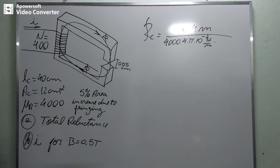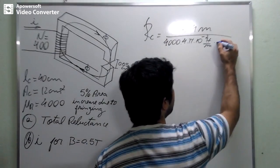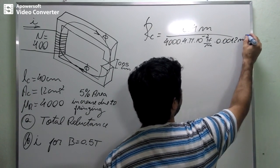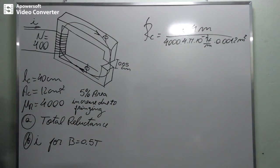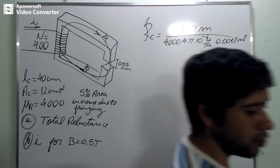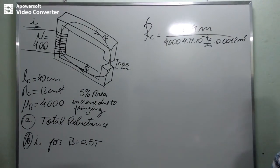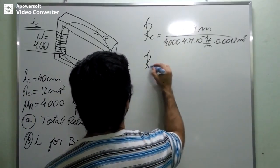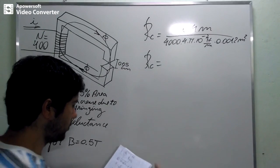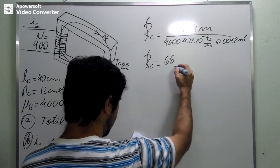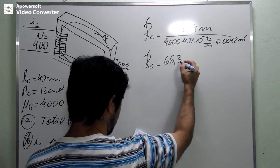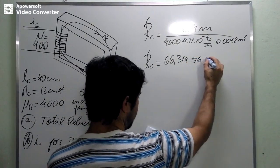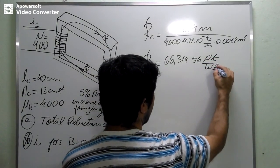And here, we are going to multiply it by the cross sectional area of the core, which was given to be 12 centimeters squared. We are going to put it in meters squared, 0.0012 meters squared. Are you guys understanding? And I already used my calculator and I discovered that the reluctance of the core is equal to 66,314.56 ampere turns per Weber.